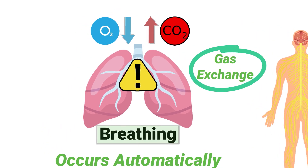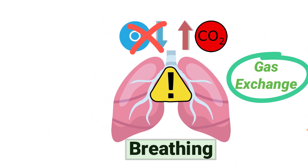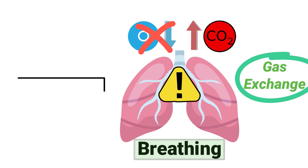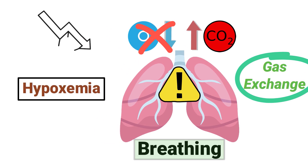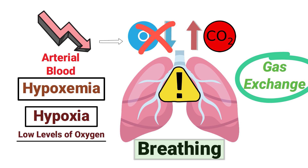There are certain problems that can affect the lungs and prevent oxygen from entering the body. You may have heard of the term hypoxemia, which means there are low levels of oxygen in arterial blood, or hypoxia, which refers to low levels of oxygen in the tissues of the body.